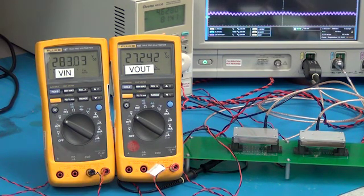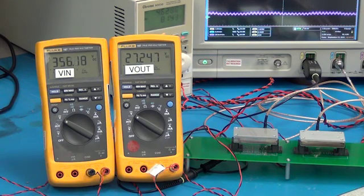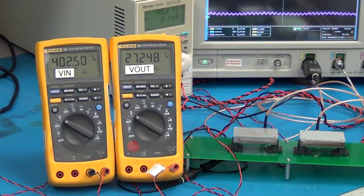As I keep increasing V in, this output voltage of the HVM continues to clamp at 27 volts. This product will go all the way up to 400 volts continuous and 500 volts transient operation.